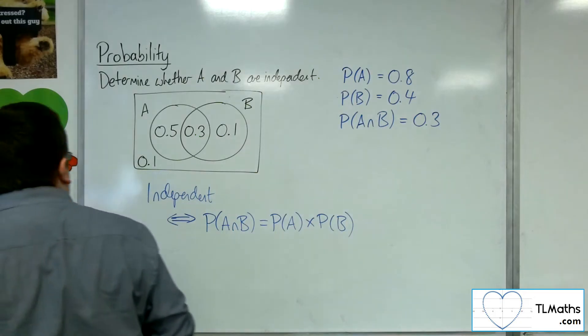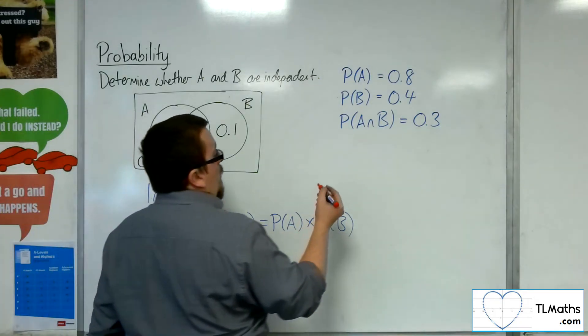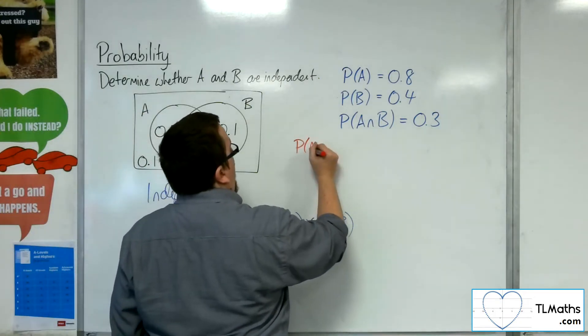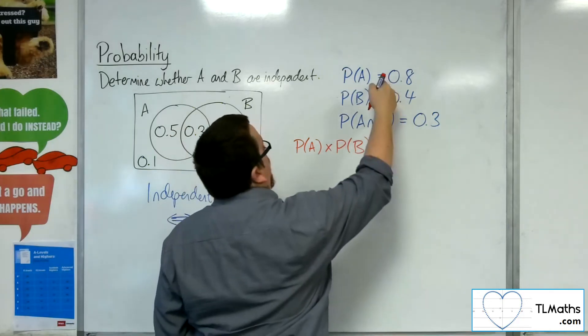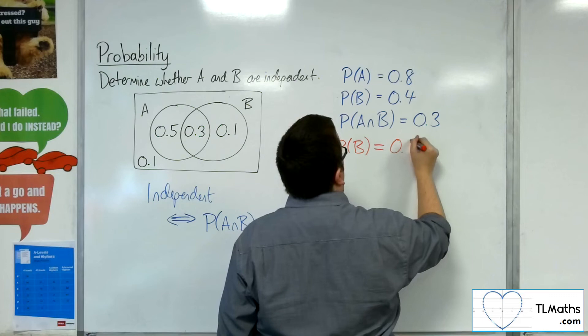Okay, so the probability of A times the probability of B is equal to 0.8 times 0.4,